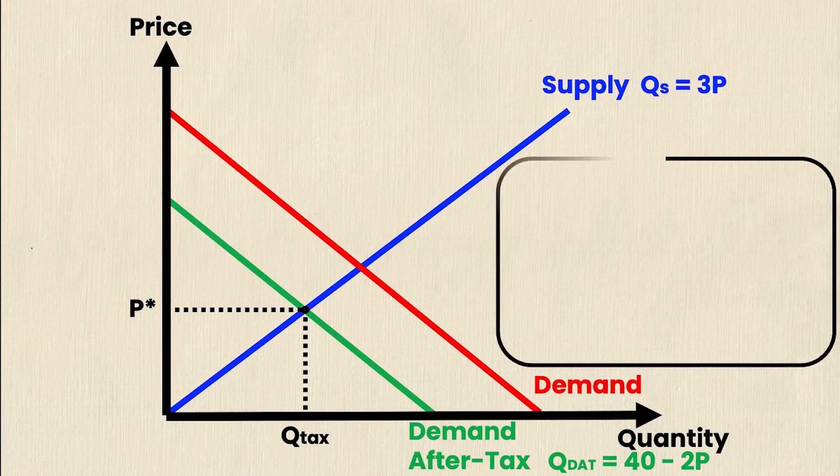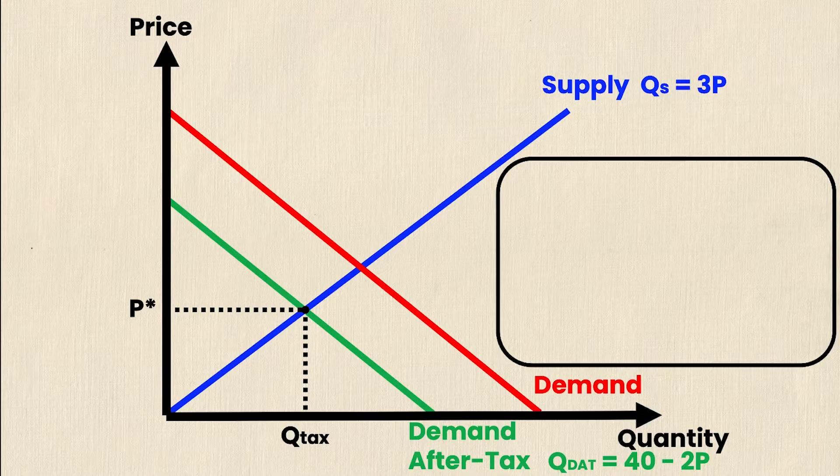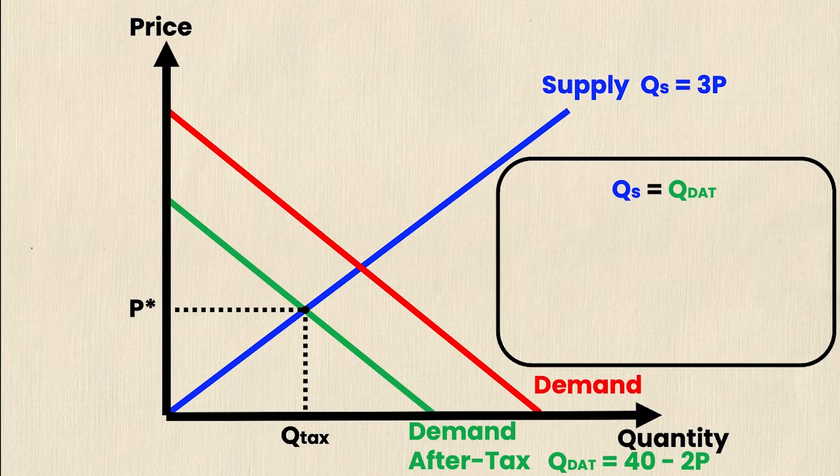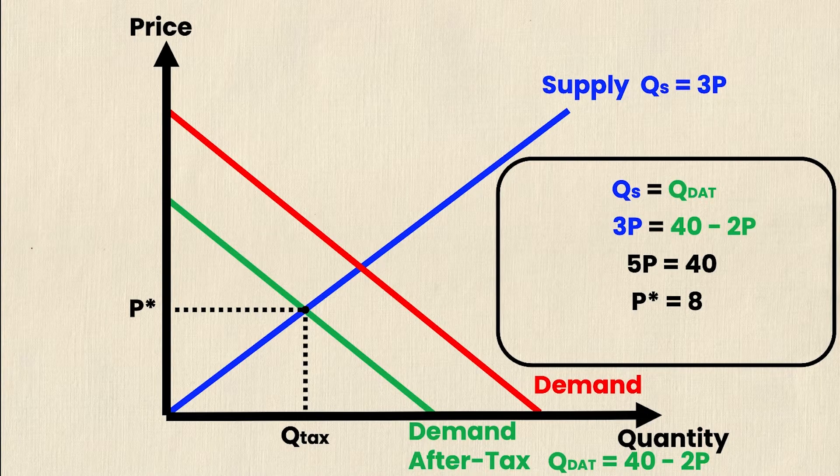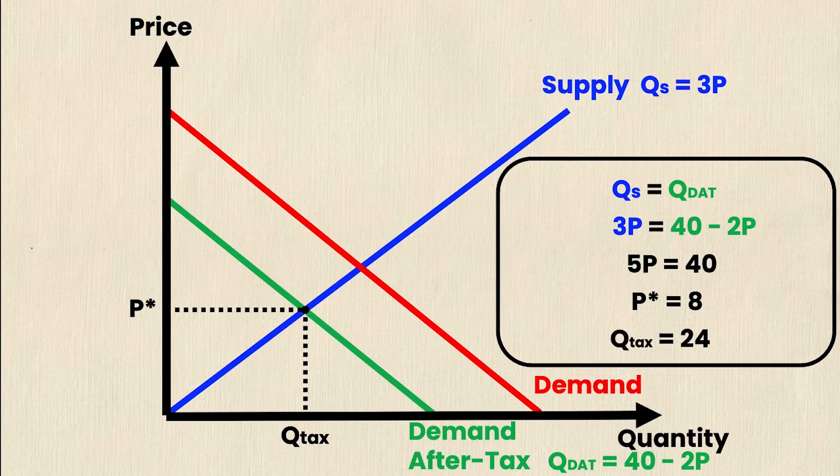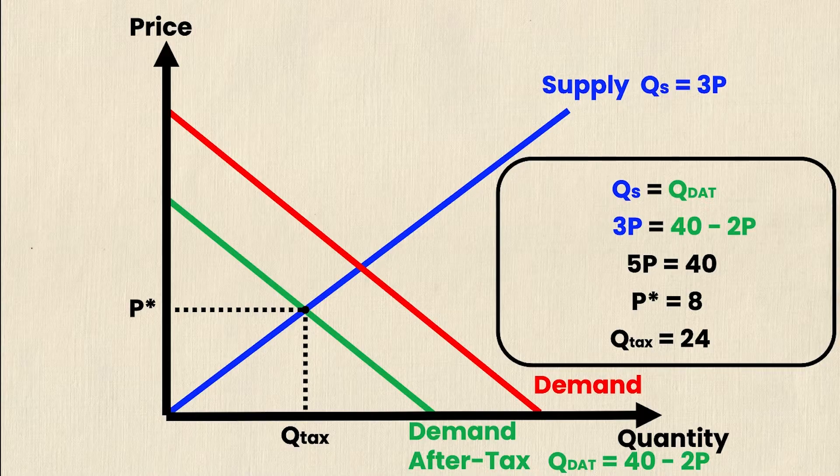So my next step is going to be to calculate the new equilibrium. Now that my demand curve has shifted left or my real income has decreased because of that $5 per unit tax. So in this case, I'll set QS equal to QDAT. Substituting in the equations, I get 3P is equal to 40 minus 2P. Rearranging, I get 5P is equal to 40. And then finally solving for P, I get P star is equal to 8. And if I take that P star equals 8 and substitute it into the QS or the QDAT equations, I will get an answer of 24. So that is the new equilibrium point where the old supply curve intersects the new demand after the tax. So let me put this on my graph.